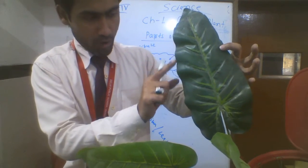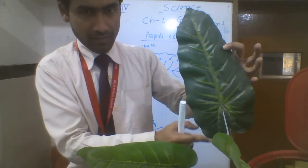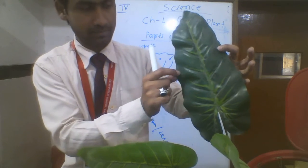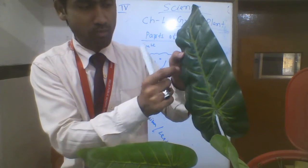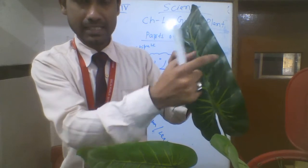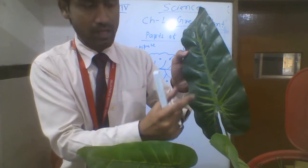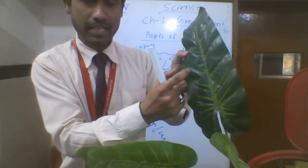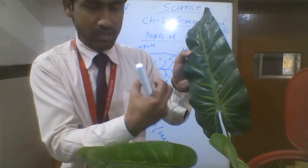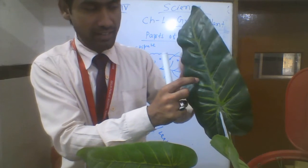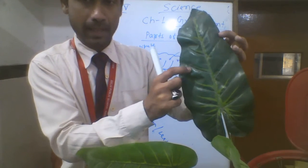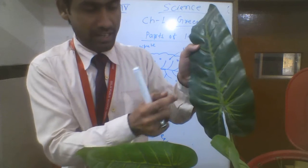The boundary of the leaf is called the margin. There are small pores in the leaf known as stomata, which absorb oxygen and carbon dioxide — they are responsible for exhaling and inhaling carbon dioxide and oxygen.